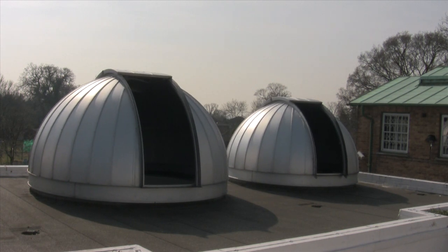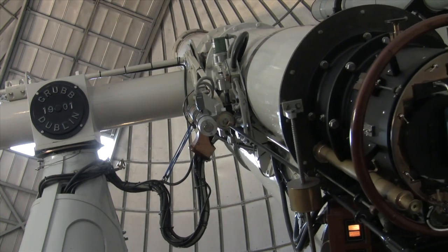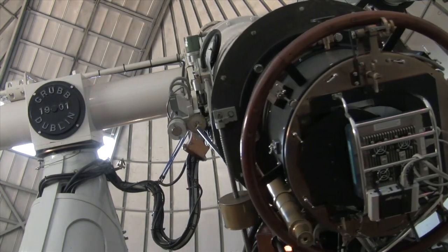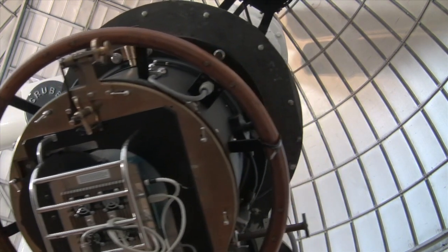It's a mark of how techniques and technology for hunting exoplanets has progressed, that space telescopes aren't necessarily required to detect transits, as students at University College London's Mill Hill Observatory recently found out.